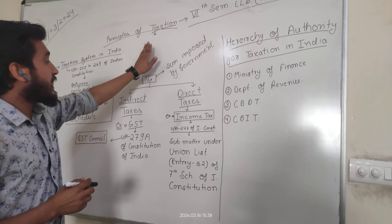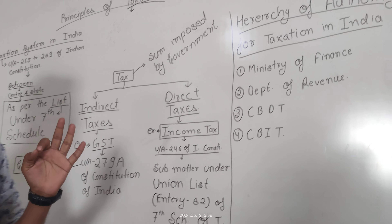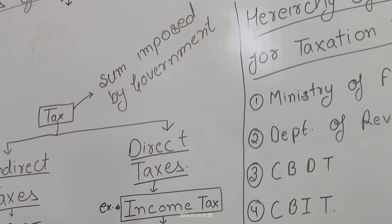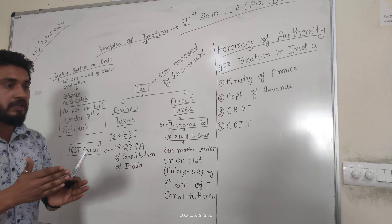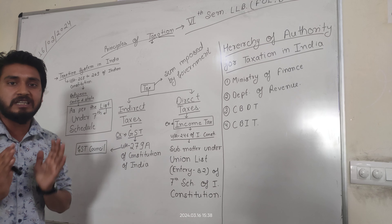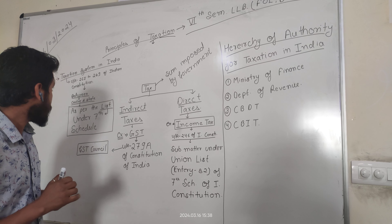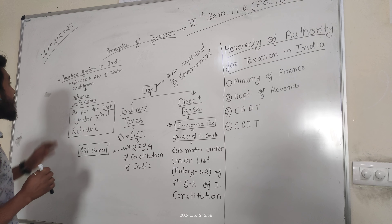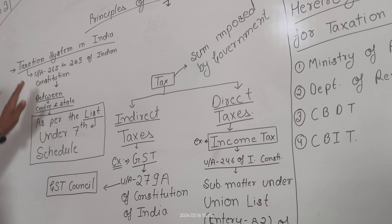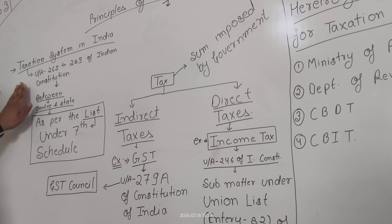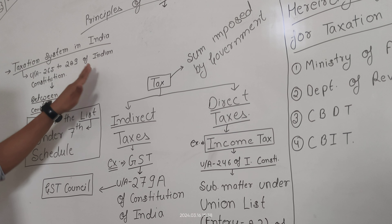When we talk about Tax, the competent authority will always be the Government — either the Central Government or the State Government. The Government will decide which authority will impose the Tax, depending on the subject list provided under the 7th Schedule of the Indian Constitution. The Taxation system in India — the authority to impose Tax — has been mentioned under Articles 265 to 280 of the Indian Constitution.